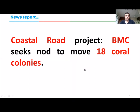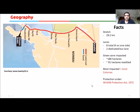The news report: 'Coastal Road Project — BMC seeks not to move 18 coral colonies.' Today we will understand what a coastal road is, what BMC is, and what these 18 coral colonies are. This is the geography of the coastal road being planned in Mumbai — covering the coastal stretch of Mumbai for 29.2 kilometers with eight lanes.